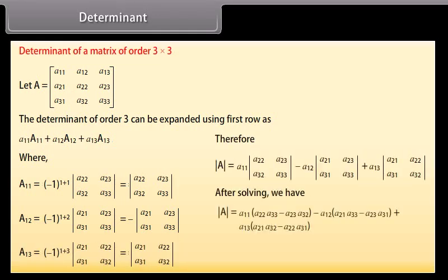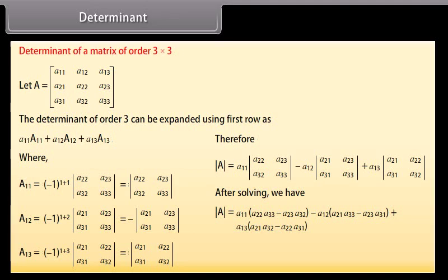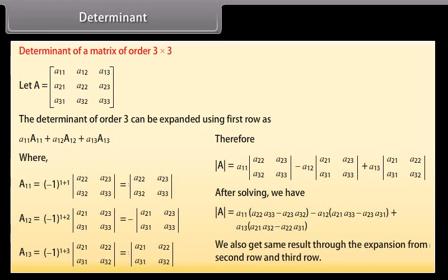After solving, we have determinant of A equals A11 times (A22·A33 minus A23·A32) minus A13 times (A21·A33 minus A23·A31) plus A13 times (A21·A32 minus A22·A31). We also get the same result through expansion from the second row and third row.